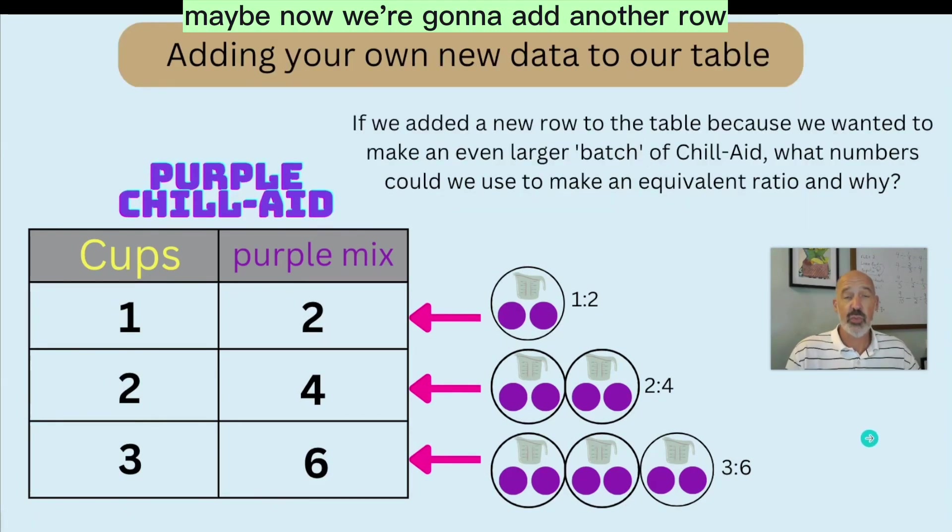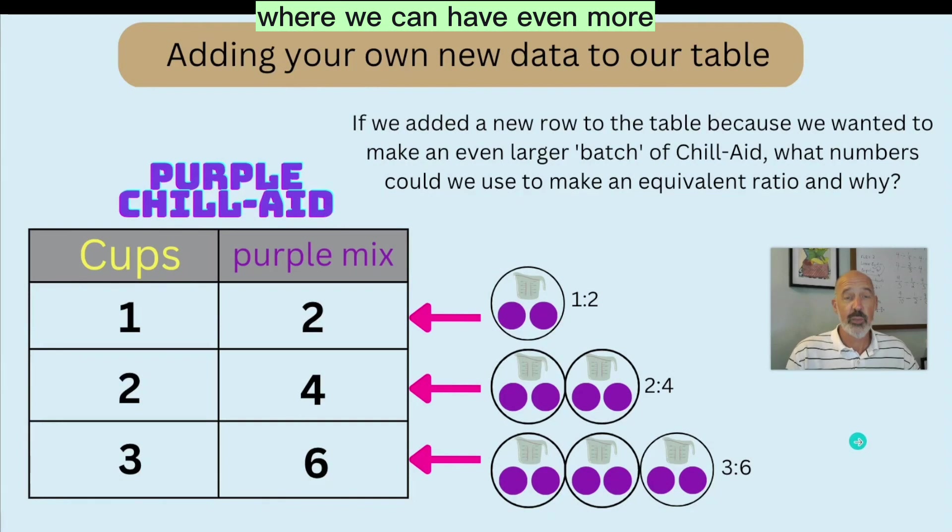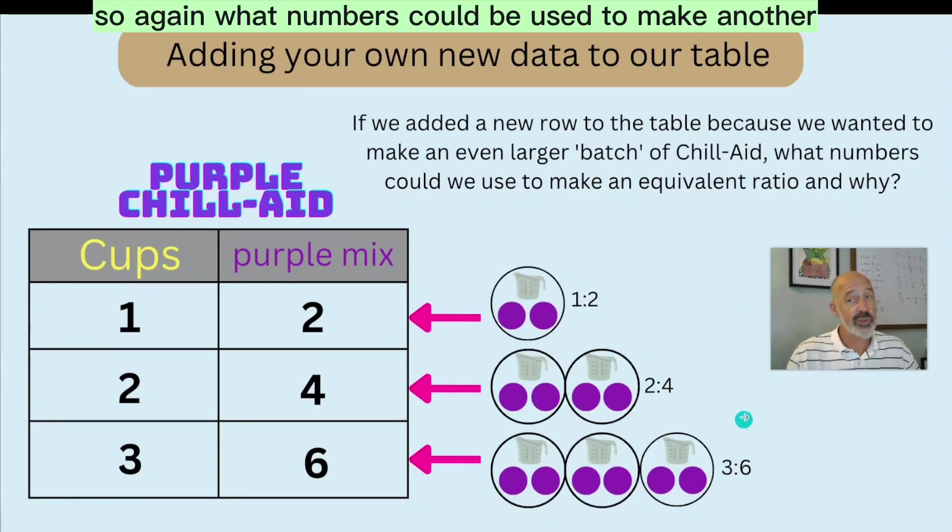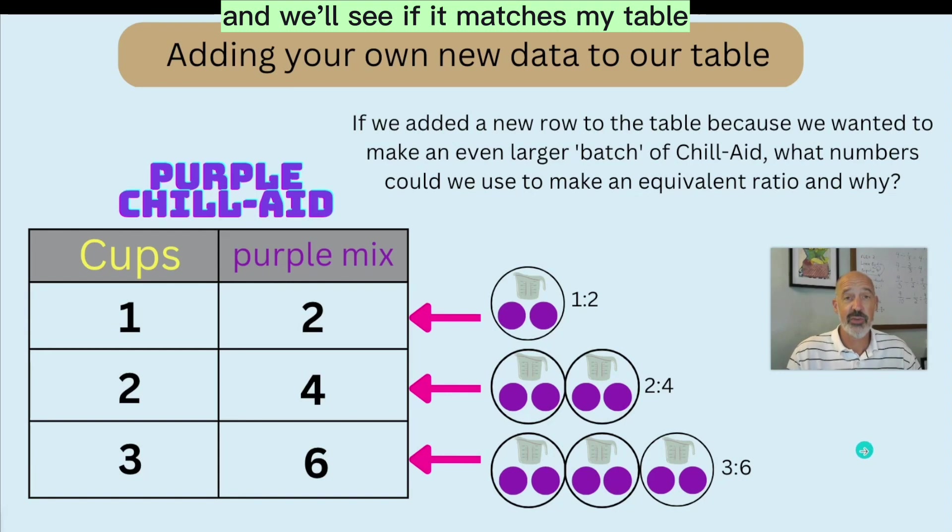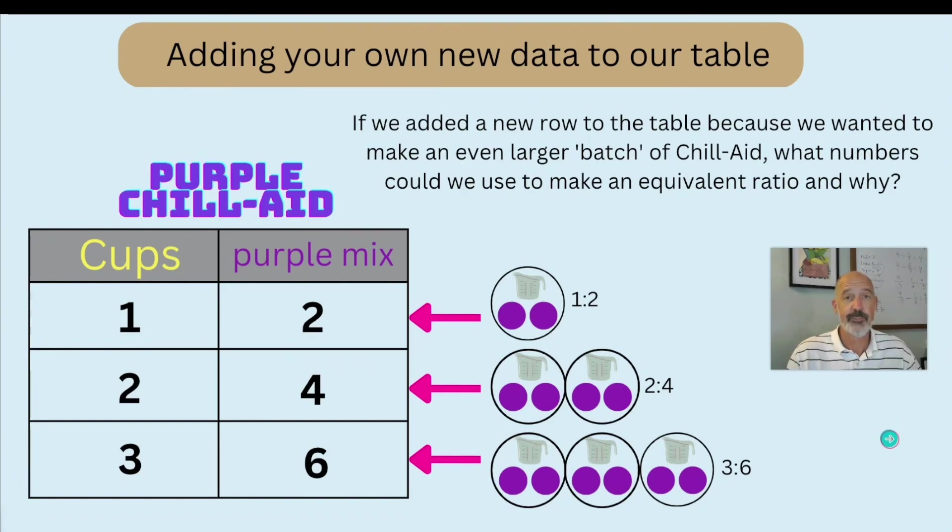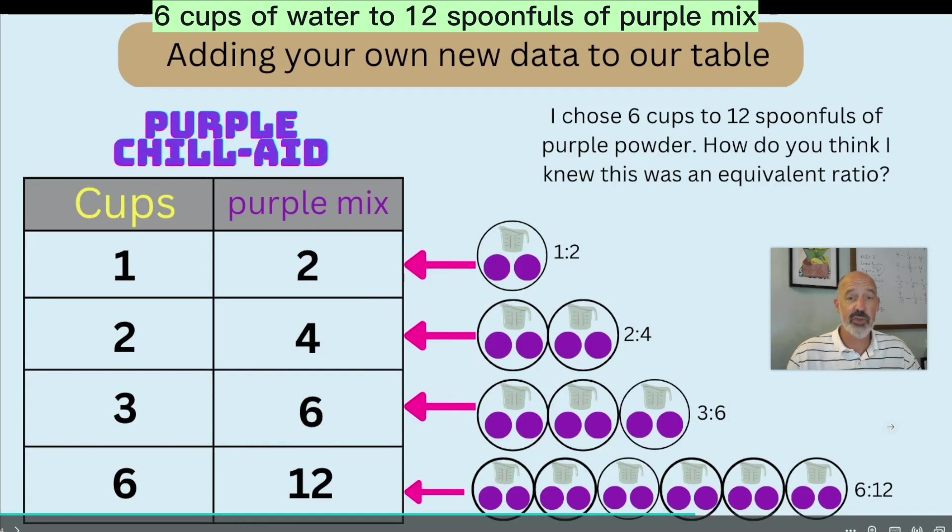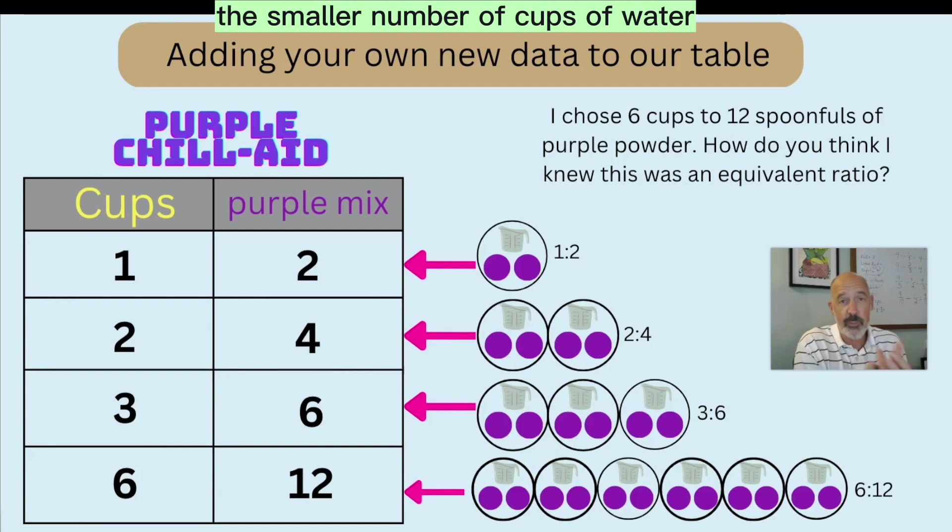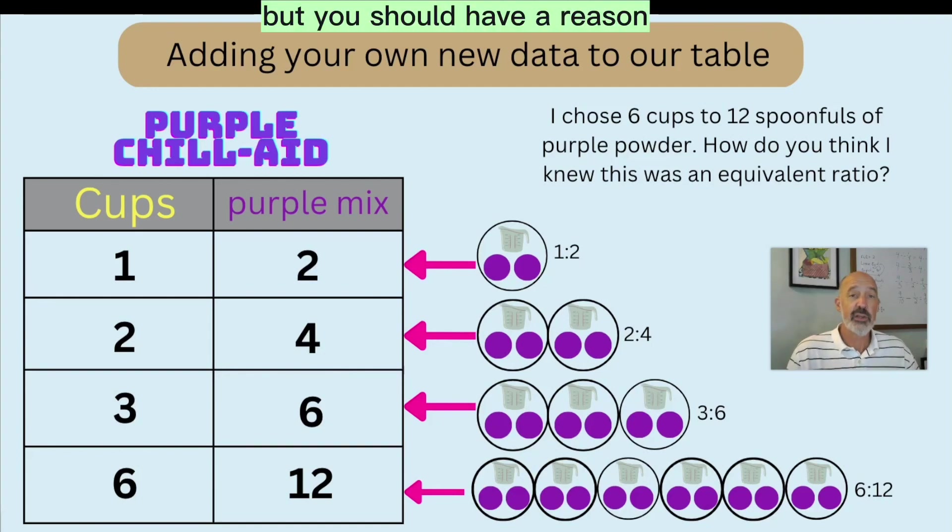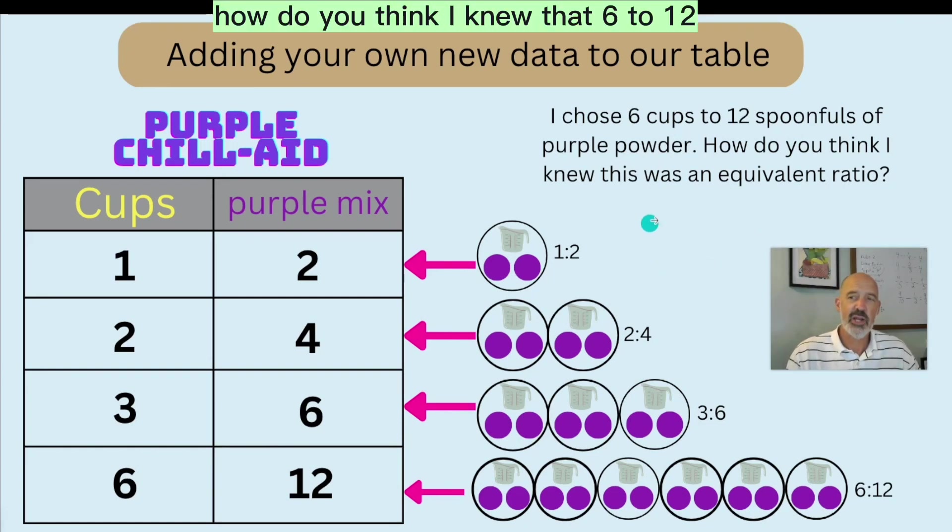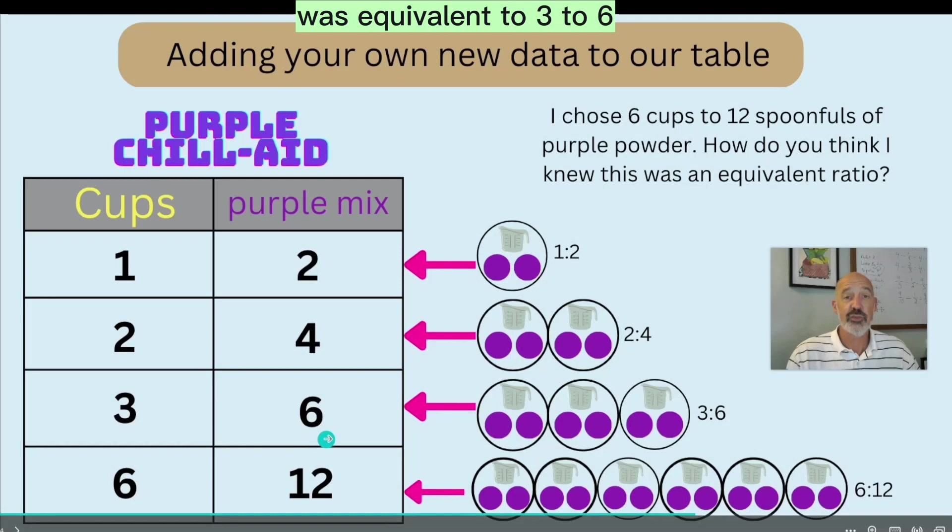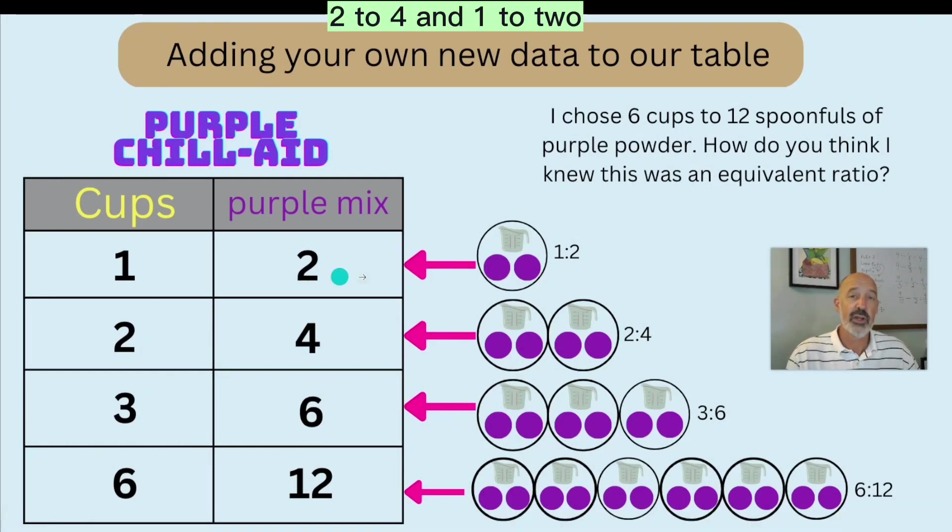Now we're going to add another row in our purple Chil-Aid table where we can have even more of the same drink. So again, what numbers could we use to make another equivalent ratio? Go ahead and put it in your table and we'll see if it matches my table. Well, I chose six cups of water to 12 spoonfuls of purple mix. You might have chosen the smaller number of cups of water, but you should have a reason why you think your ratio is equivalent to all of these. How do you think I knew that six to 12 was equivalent to three to six, two to four, and one to two?